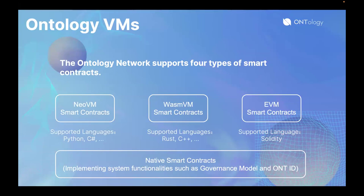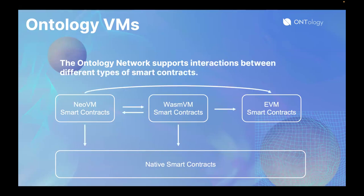Ontology supports three different types of VMs, including NuVM, WasmVM, and EVM. Developers can choose different languages according to their own preferences to develop smart contracts and DApps on the Ontology mainnet. In addition, we use native smart contracts to implement system-level functions such as governance and OntID. Different types of smart contracts can interact with each other — NuVM contracts and WasmVM contracts can interact with each other, and they can both call EVM contracts and native smart contracts, which greatly increases the flexibility of smart contract development.